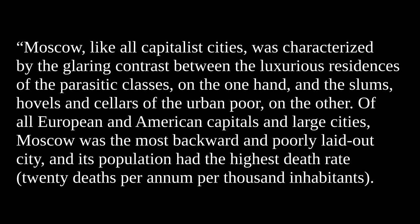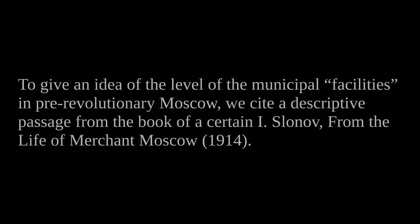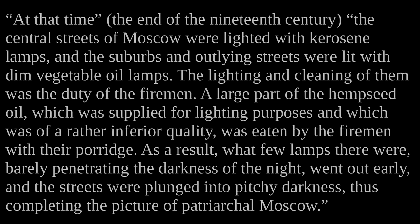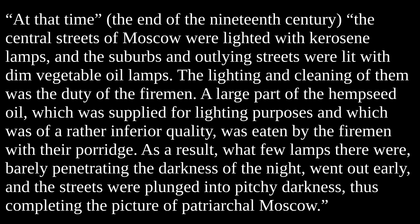To give an idea of the level of municipal facilities in pre-revolutionary Moscow, we cite a descriptive passage from the book of a certain I. Slonov called From the Life of Merchant Moscow, 1914. Slonov says: "At that time — that is, the end of the 19th century — the central streets of Moscow were lighted with kerosene lamps, and the suburbs and outlying streets were lit with dim vegetable oil lamps. The lighting and cleaning of them was the duty of firemen. A large part of the hempseed oil supplied for lighting purposes was eaten by the firemen with their porridge. As a result, what few lamps there were barely penetrated the darkness of the night, went out early, and the streets were plunged into pitchy darkness, thus completing the picture of patriarchal Moscow."